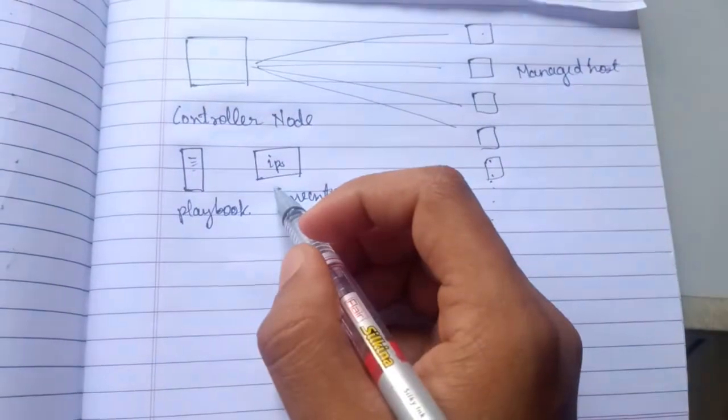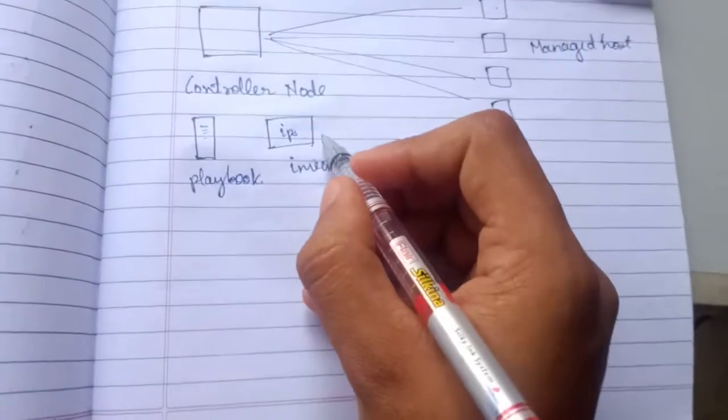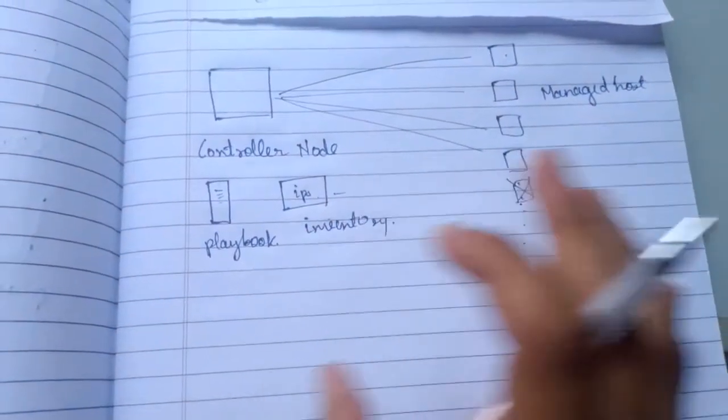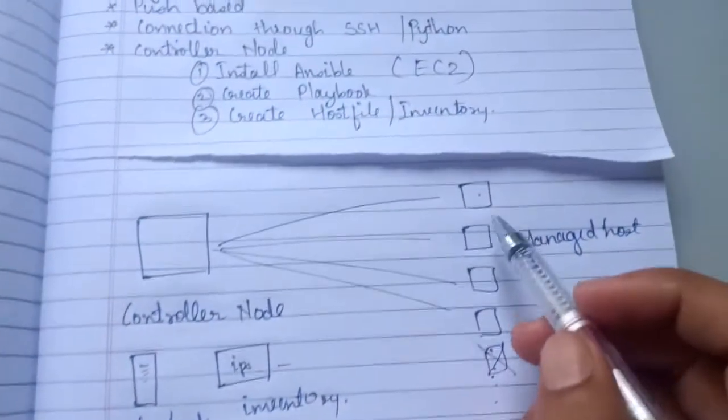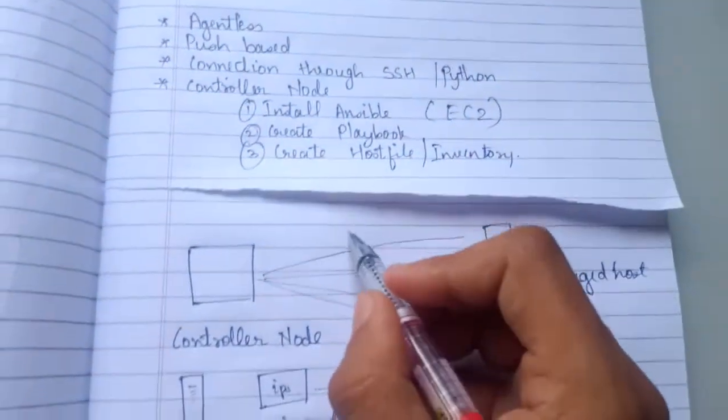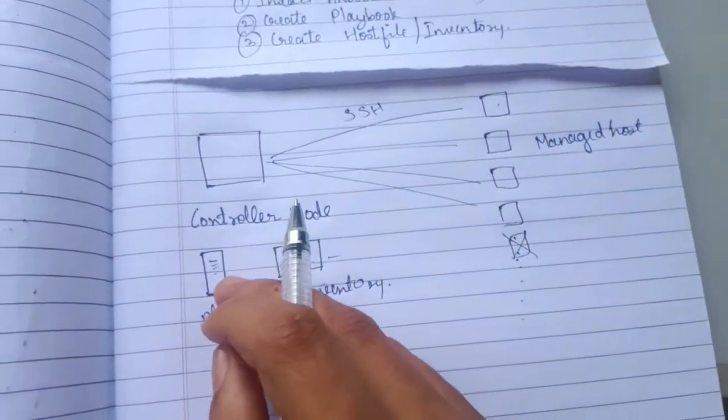Or if you want to cancel it you just need to remove the IP from the inventory file. This is how actually Ansible works. The connection between the controller and the managed node happens using SSH. So controller node creates SSH key pair which is then transferred to managed host.